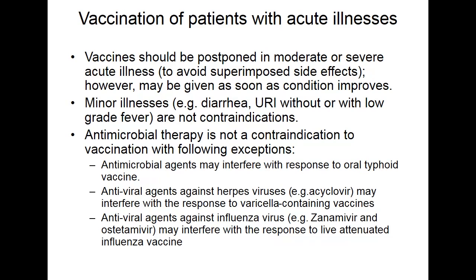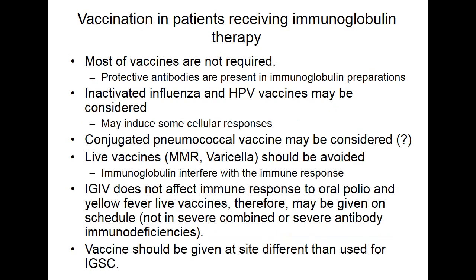Antiviral agents against herpes virus may interfere with the response to varicella-containing vaccines. Antiviral agents for influenza may interfere with the response to live influenza vaccine, though we generally don't give live influenza vaccine in PID. For patients receiving immunoglobulin therapy, most vaccines are not required because protective antibodies are already present. Inactivated influenza and HPV vaccines may be considered because they can induce some cellular immune response. Live vaccines should be avoided because they interfere with immune responses.